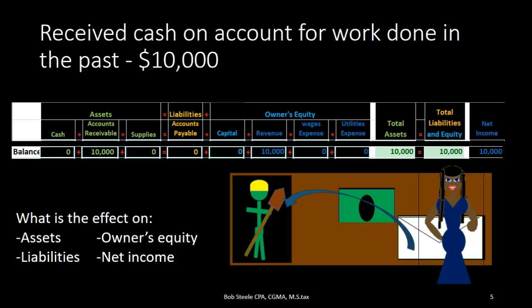In this lecture we're going to record a transaction related to the receipt of cash for work that had been done in the past. We are receiving cash — we're going to imagine we're receiving it in the mail for work that wasn't done today but was done at some point in the past.